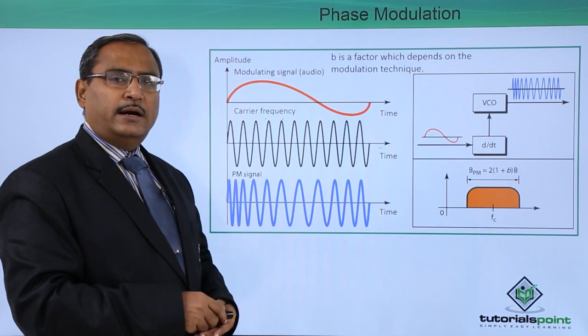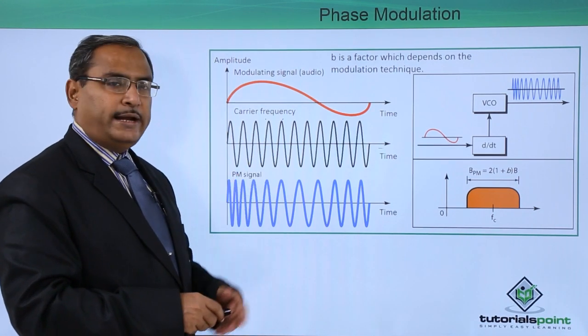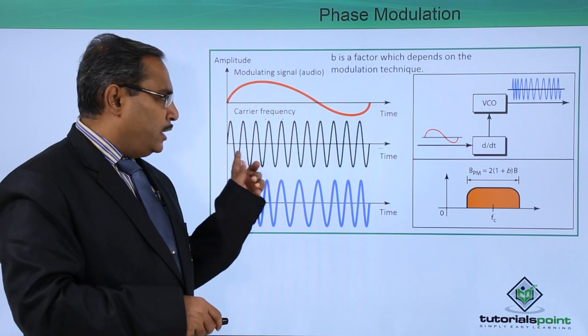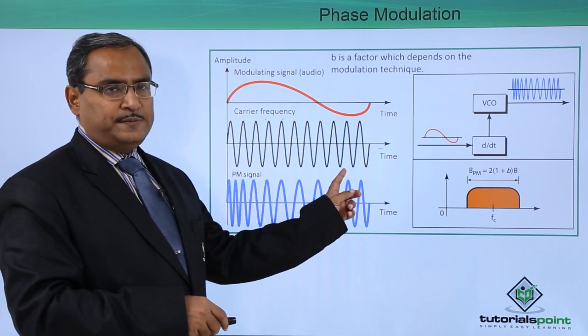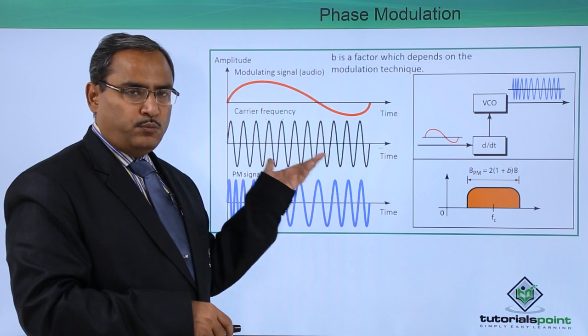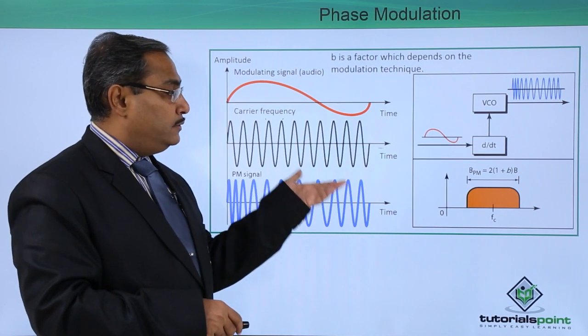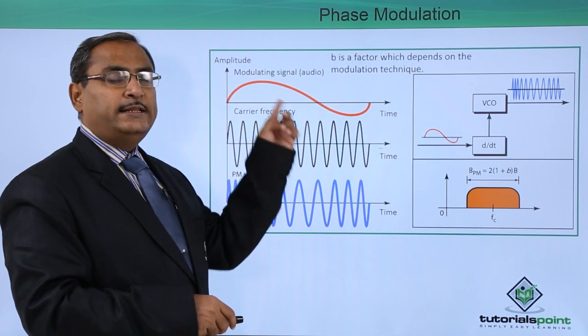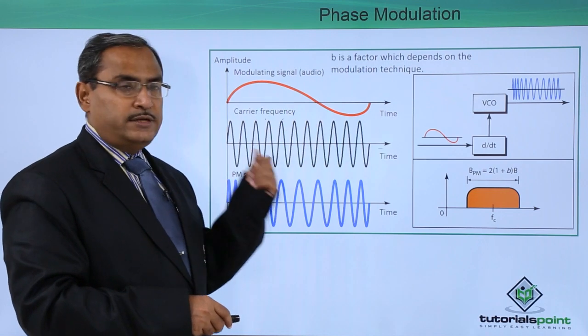And here we are having the carrier frequency. This particular carrier frequency is our fc and this is the carrier respective waveform. And this particular waveform will be carrying this modulating signal data.